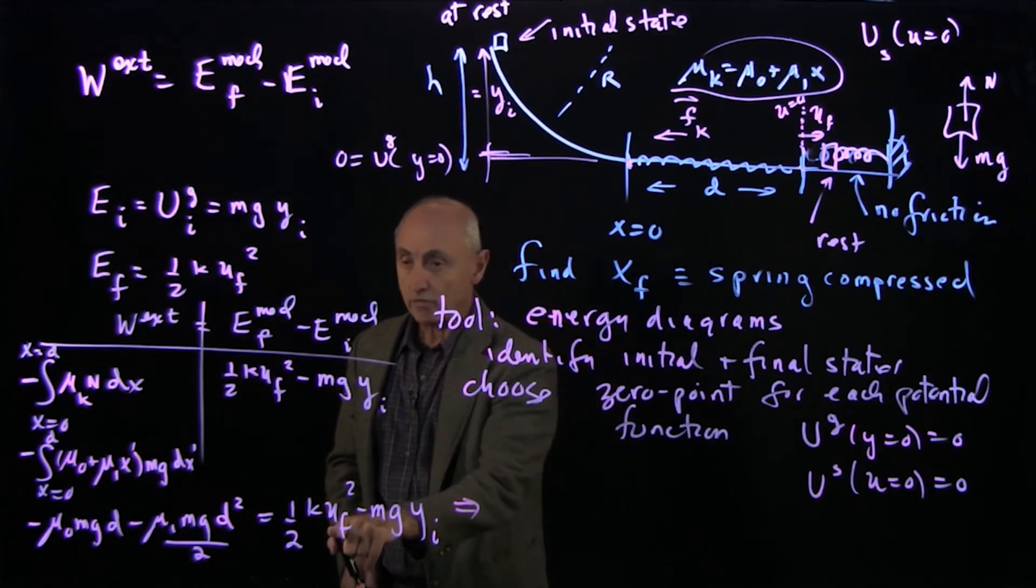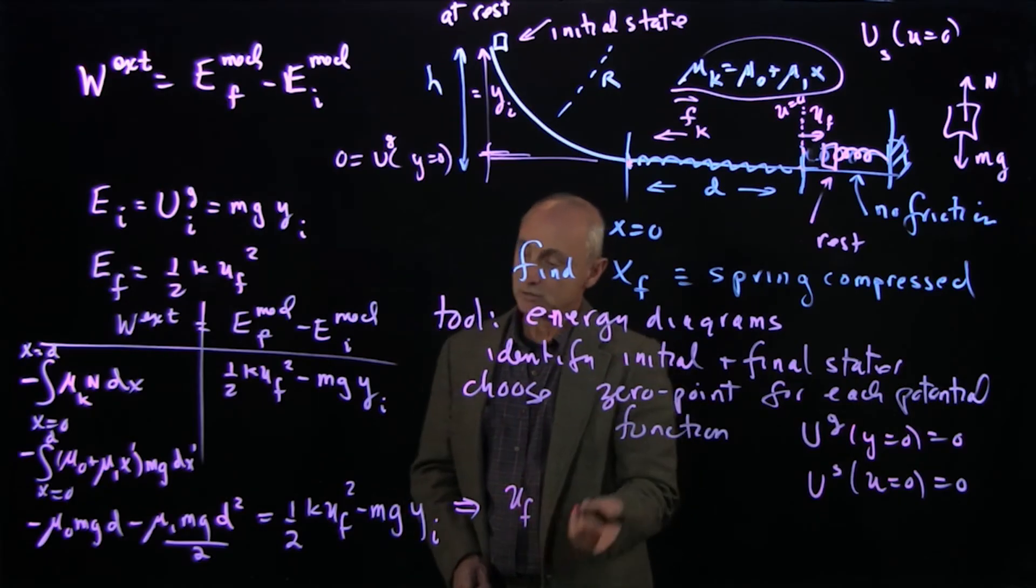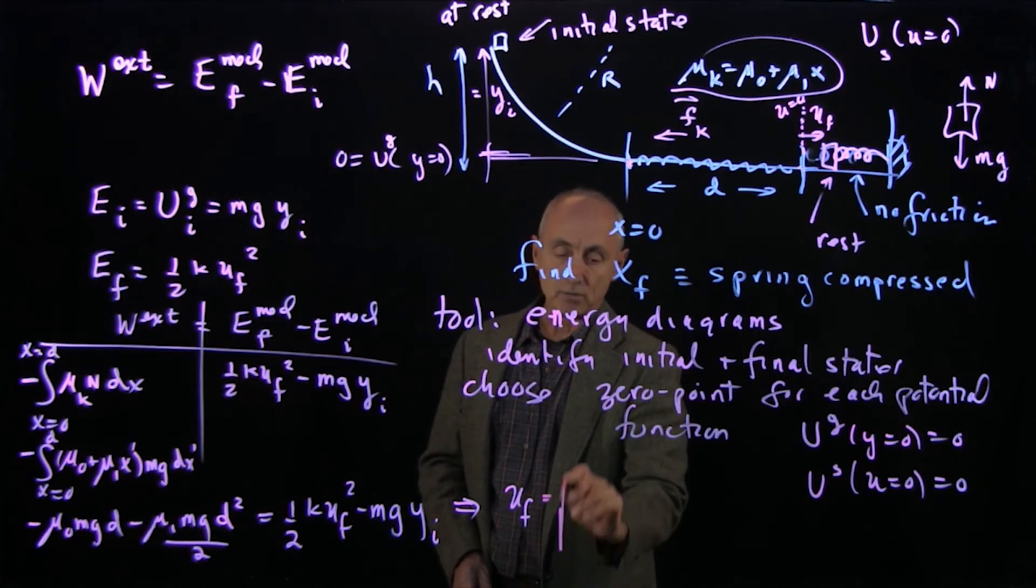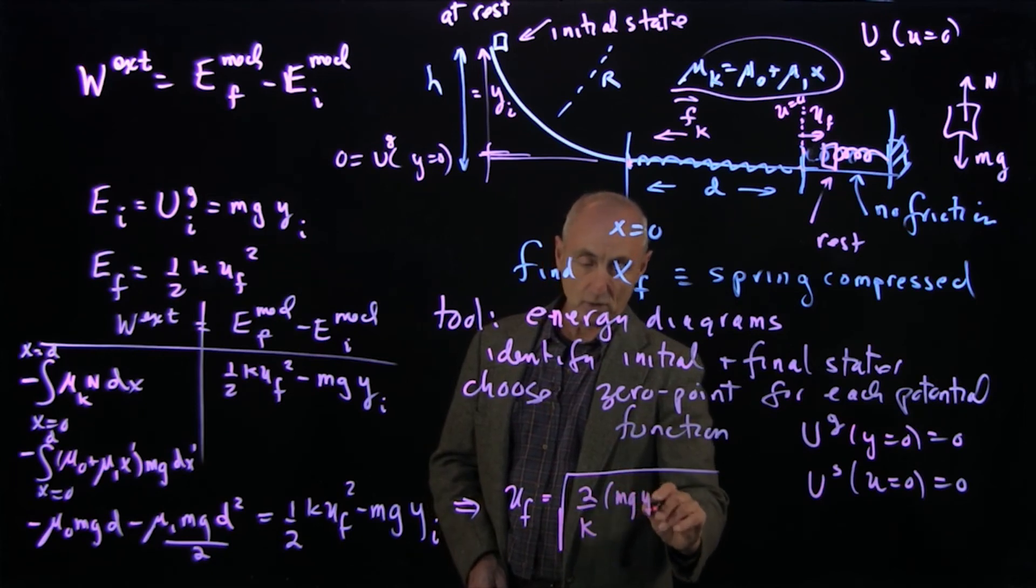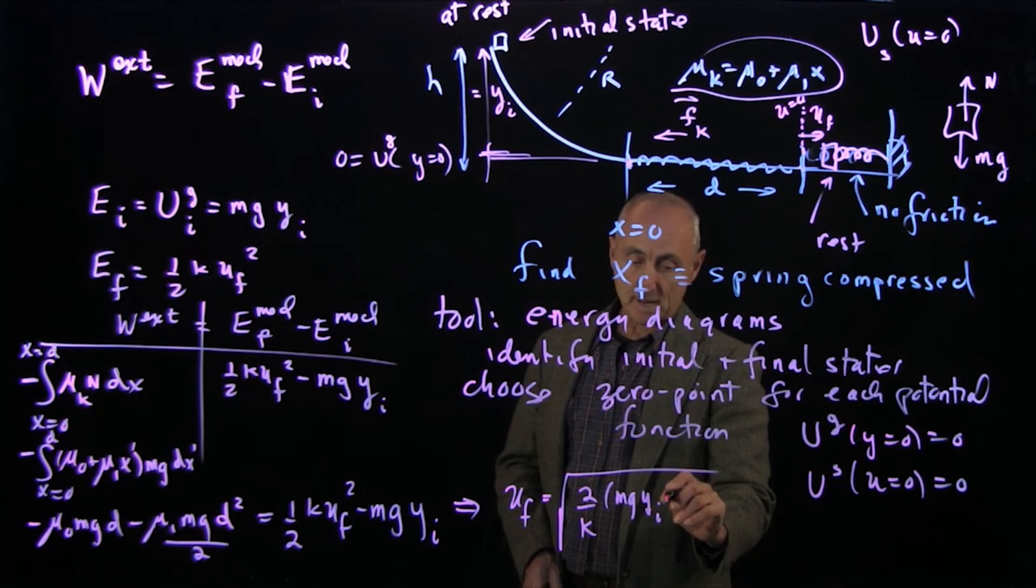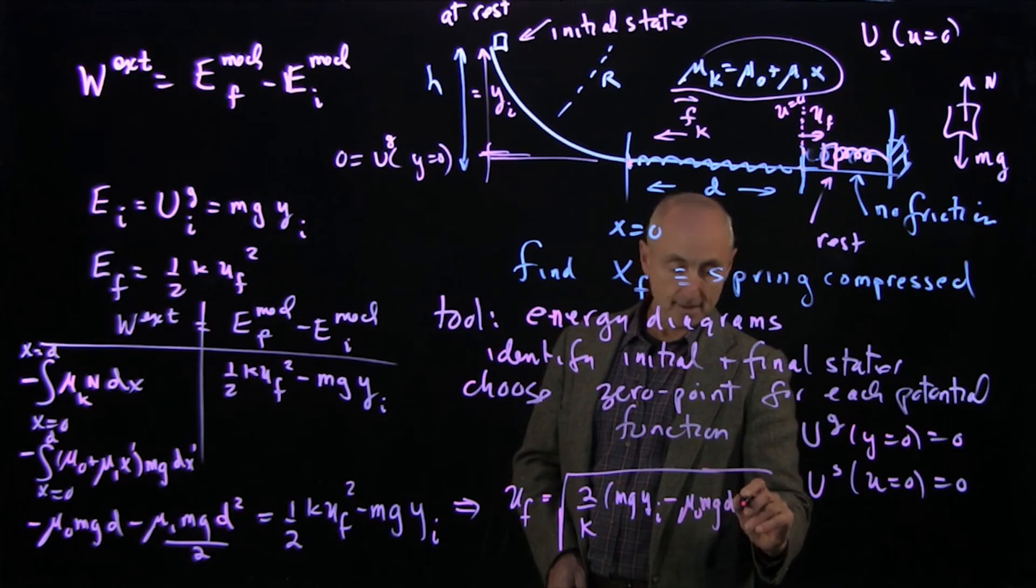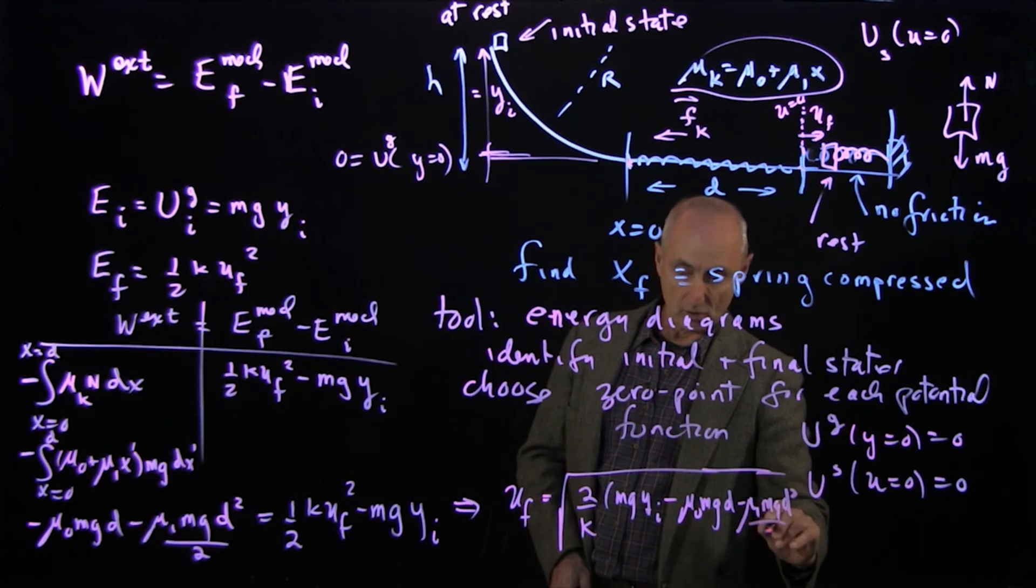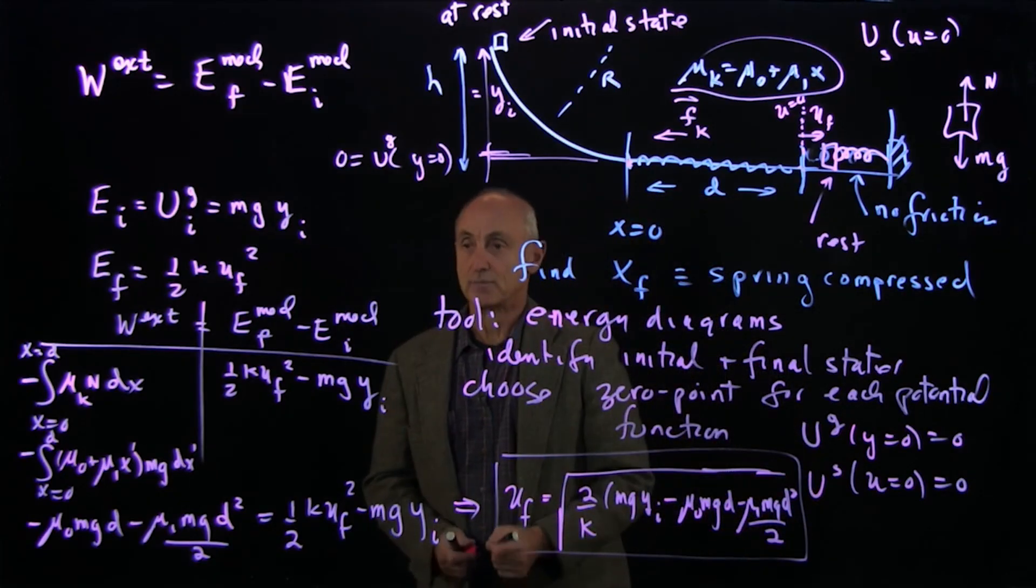I can now solve for how much this spring has been compressed with a little bit of algebra. And so I'm just going to bring a bunch of terms over to the other side and take the square root of 2 divided by k of mg y initial minus mu 0 mg d minus mu 1 mg d squared over 2. And that's how much the spring is compressed.